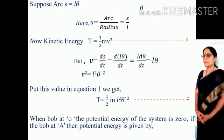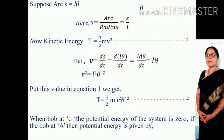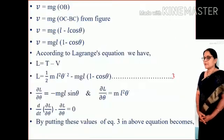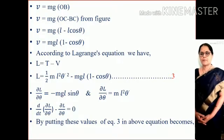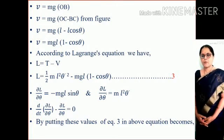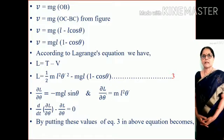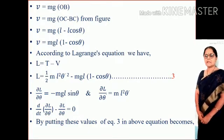When the bob is at point O, the potential energy of the system is zero. If the bob is at point A, the potential energy can be calculated. V equals mg times OB. We know that from the figure, OB equals OC minus BC. V equals mg(L minus L cos theta). OC equals L and BC equals L cos theta. V equals mgL(1 minus cos theta).